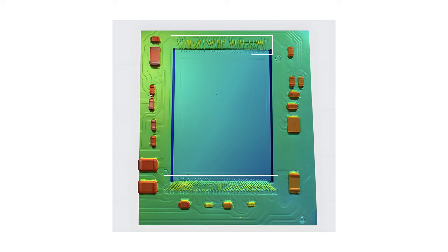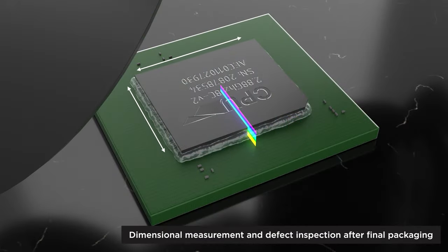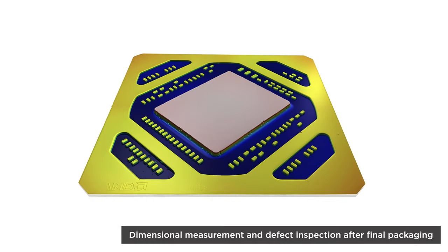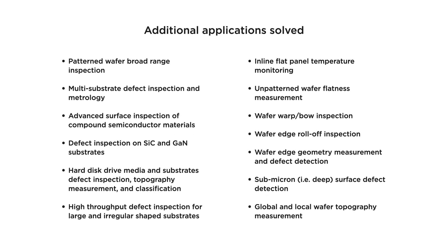In addition, defects such as breaks or bends in the wire, capturing the length, width, and height of the chip after final packaging. As seen here, there is a growing list of other applications that LMI has solved using G5 sensors in the semiconductor industry.